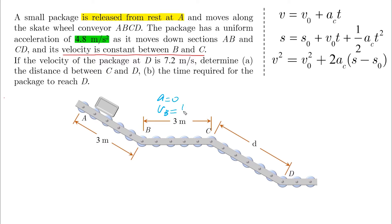If the velocity at D is 7.2 meters per second, determine the distance D between C and D. So let's start with this.